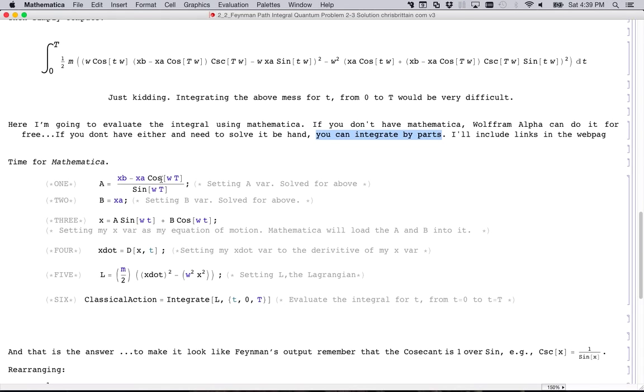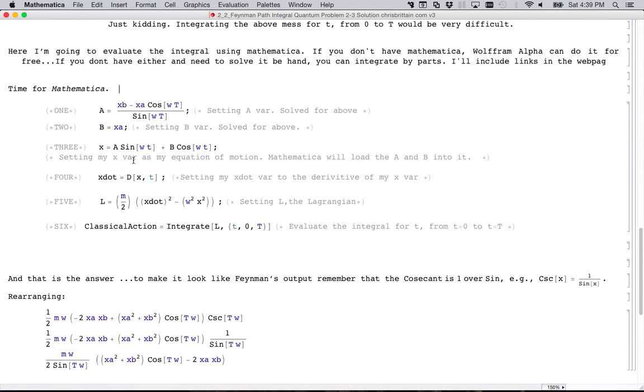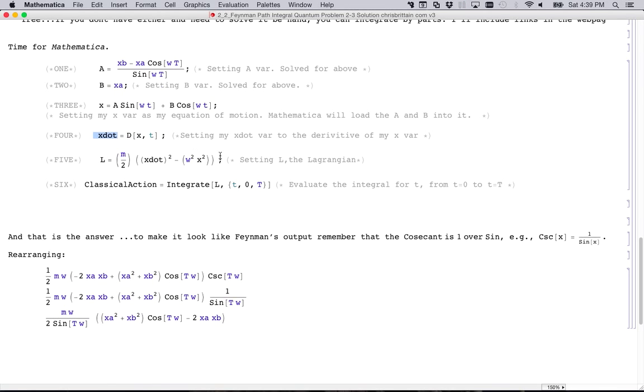Anyways, using Mathematica to solve this. First I set my a, which I solved for. I set my b variable, which I solved for above. I enter my x, and so a and b are in memory. Mathematica is going to load these variables into this equation and save all of that as x. So now I have my x. I'm going to just calculate my x dot by taking the derivative. This is the derivative sign of Mathematica of x for t, and then you save that as x dot. That's done in one step. So I have all this in memory.